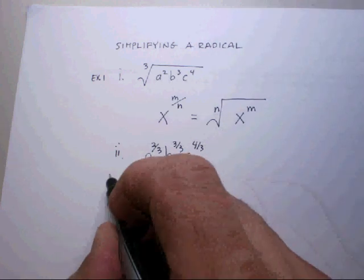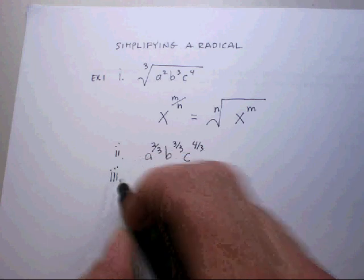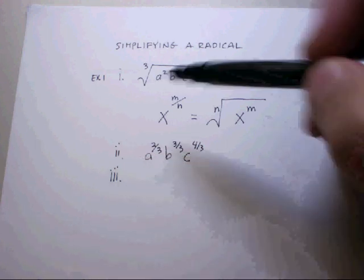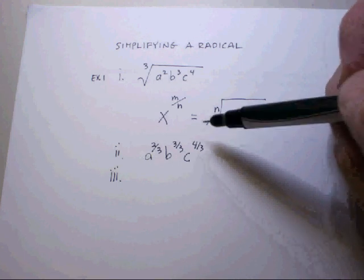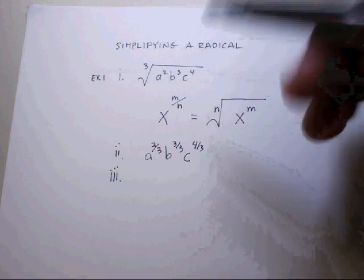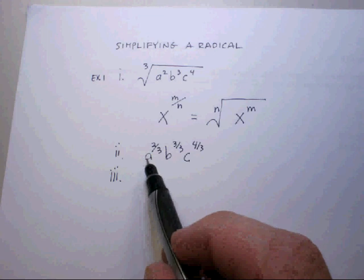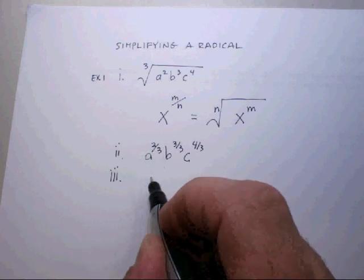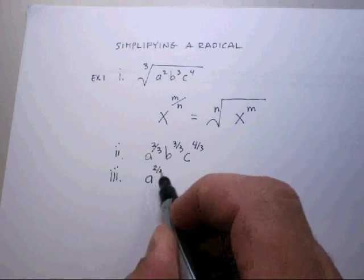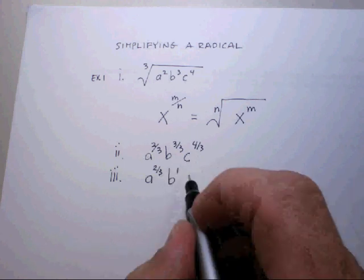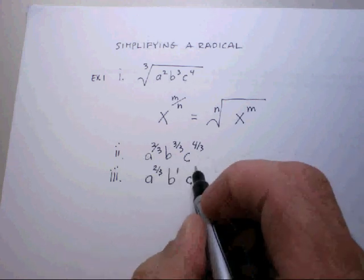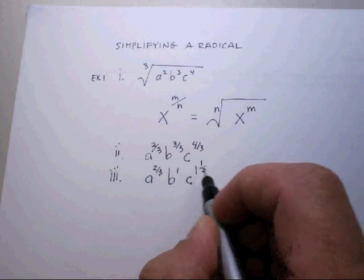Now at this point it gets kind of interesting, because what I'm looking for are fractions in the exponent that are greater than 1 and less than 1. Now in this case, I've got a fractional exponent that is less than 1. In this case, it becomes b to the 1st, and this one becomes c to the 1 and 1 third.